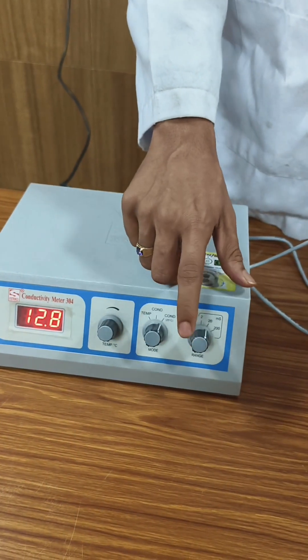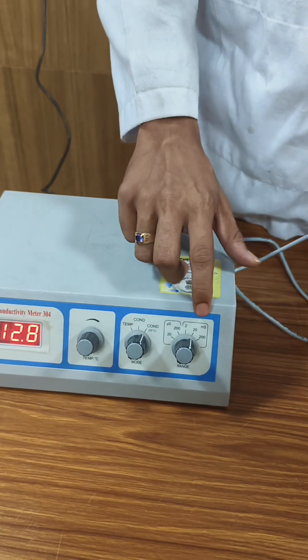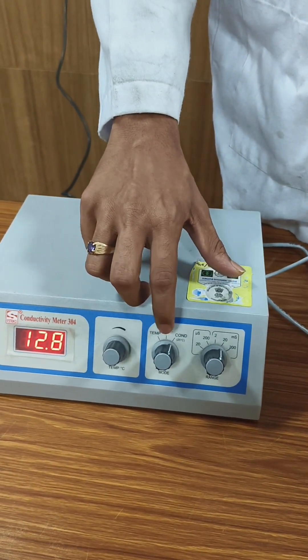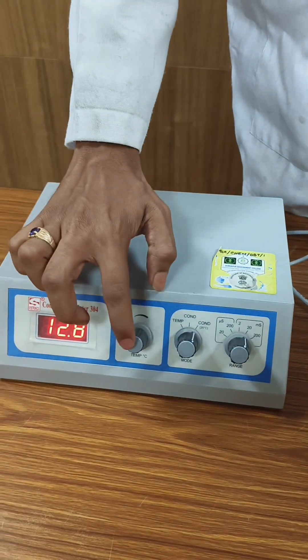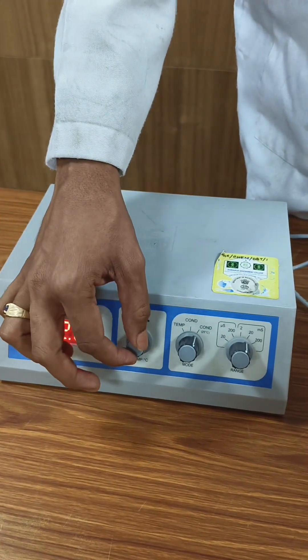Now here are three knobs. The first knob sets the unit in microsiemens or millisiemens. The second knob has three levels: temperature, conductivity, and conductivity at 25 degrees Celsius. The third is the temperature knob to adjust the temperature up or down.